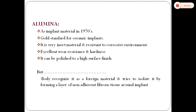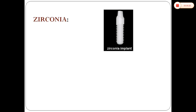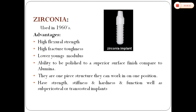Alumina as an implant material mainly came into use in the 1970s. It is the gold standard for ceramic implants — a very inert material resistant to a corrosive environment, with excellent wear resistance and hardness. It can be polished to a high surface finish. However, the body recognizes it as a foreign material and tries to isolate it by forming a layer of non-adherent fibrous tissue around the implant. Zirconia implants, used since the 1960s, have advantages of high flexural strength, high fracture toughness, lower elastic modulus, and the ability to polish to a superior surface finish compared to alumina. They are one-piece structures that function in a subperiosteal or transosteal position with strength, stiffness, and hardness.